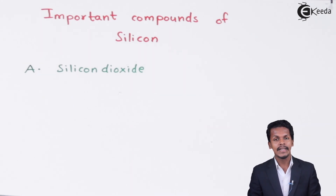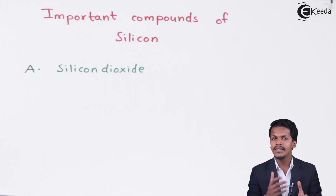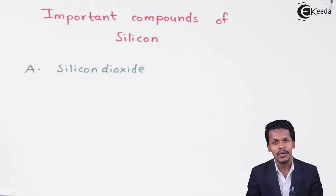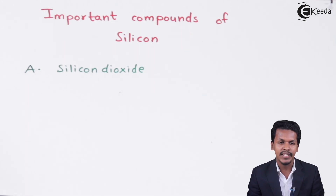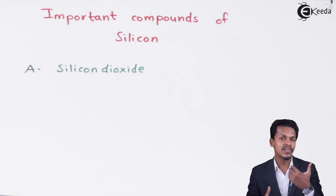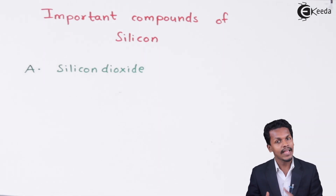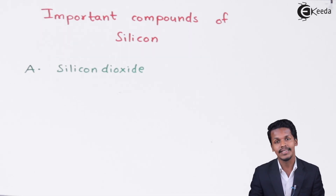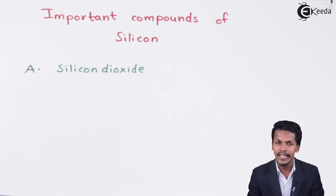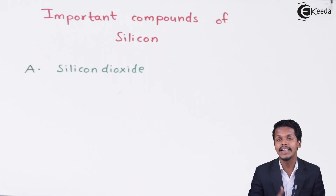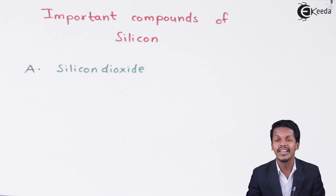Let me talk about silicon with respect to carbon. Carbon is the first element of group 14 and silicon is the second element of group 14. Carbon has a valency of 4 but it cannot extend its coordination number. Similarly, silicon also has a coordination number of 4, but silicon can extend its coordination number because it has d-orbitals in its electronic configuration. That is the reason that, due to the presence of d-orbitals, it can extend its coordination number from 4 to 5, and sometimes 6 also.